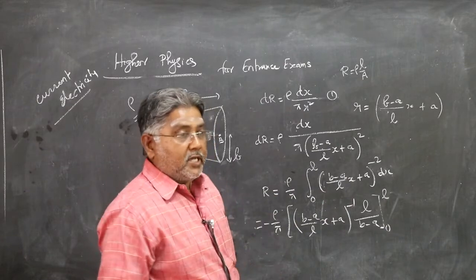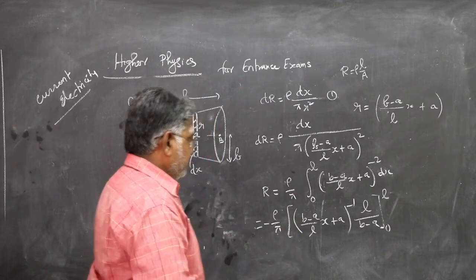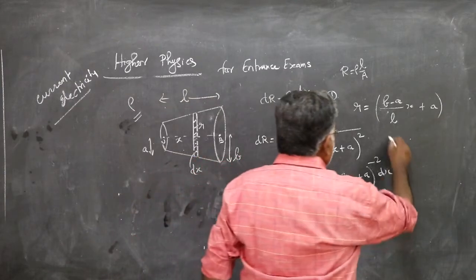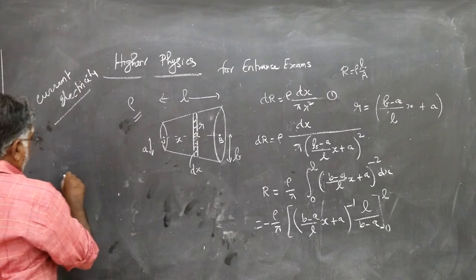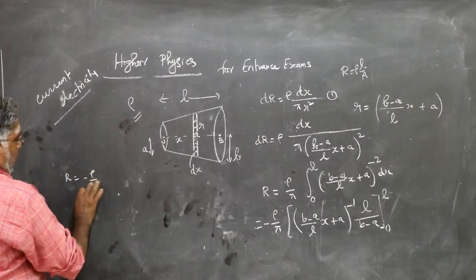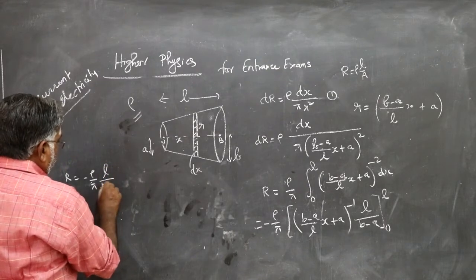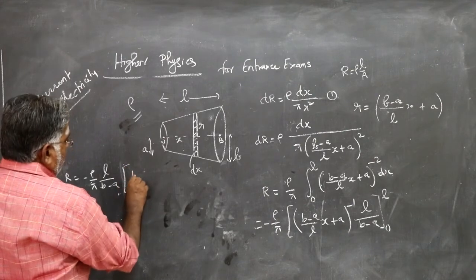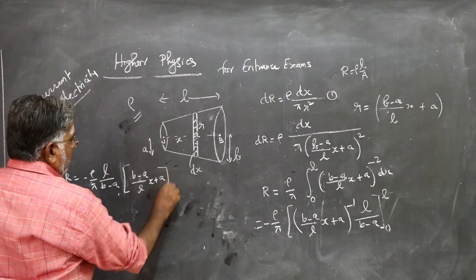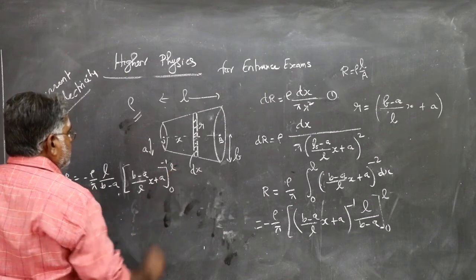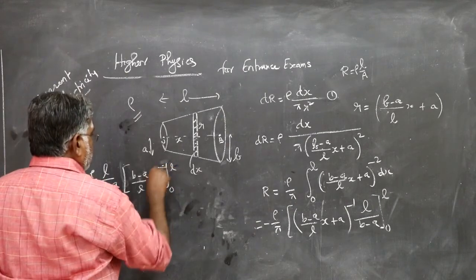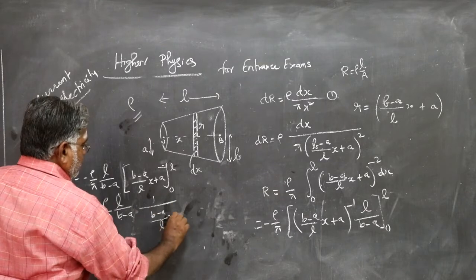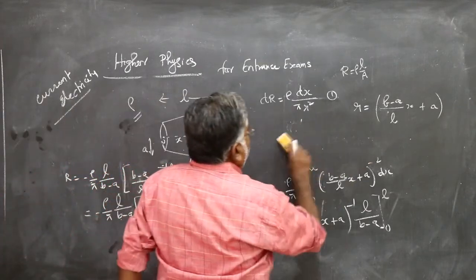You should know a little bit of integration techniques for that. This is the integration part of it. Now, this being definite integral, L by B minus A being constant, you can pull it outside. So I write here R equals minus rho by pi, L by B minus A, then (B minus A by L into x plus A) power minus 1, 0 to L. Or you can write it as 1 by that.